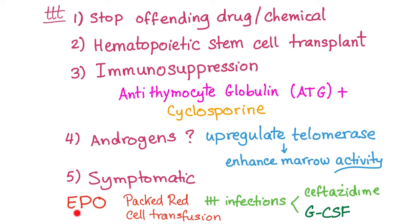Symptomatic treatment: EPO can help. Packed red cells — fine. Do not give whole blood. Why? Whole blood can contain antibodies in the plasma, and your bone marrow has failed and you are taking immunosuppressive drugs. Plasma can contain antibodies that can destroy your life. Treat infections with broad-spectrum antibiotics such as ceftazidime. Granulocyte colony-stimulating factor — remember the granulocytes, those white blood cells with granules? Colony-stimulating factor is something to stimulate them.